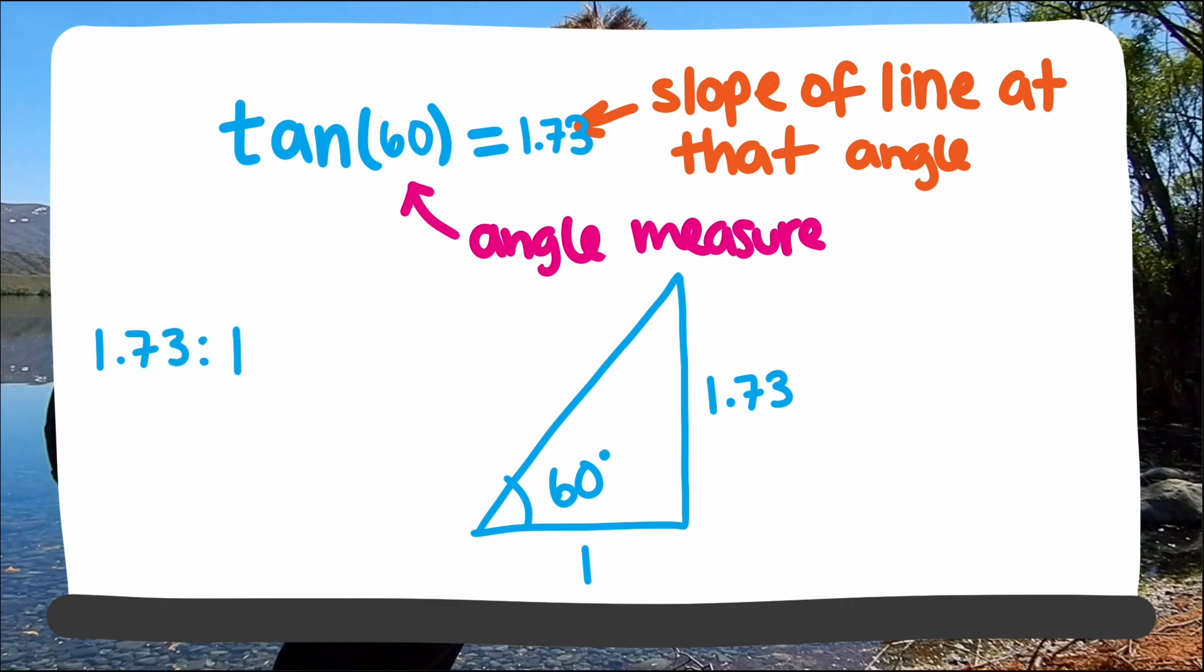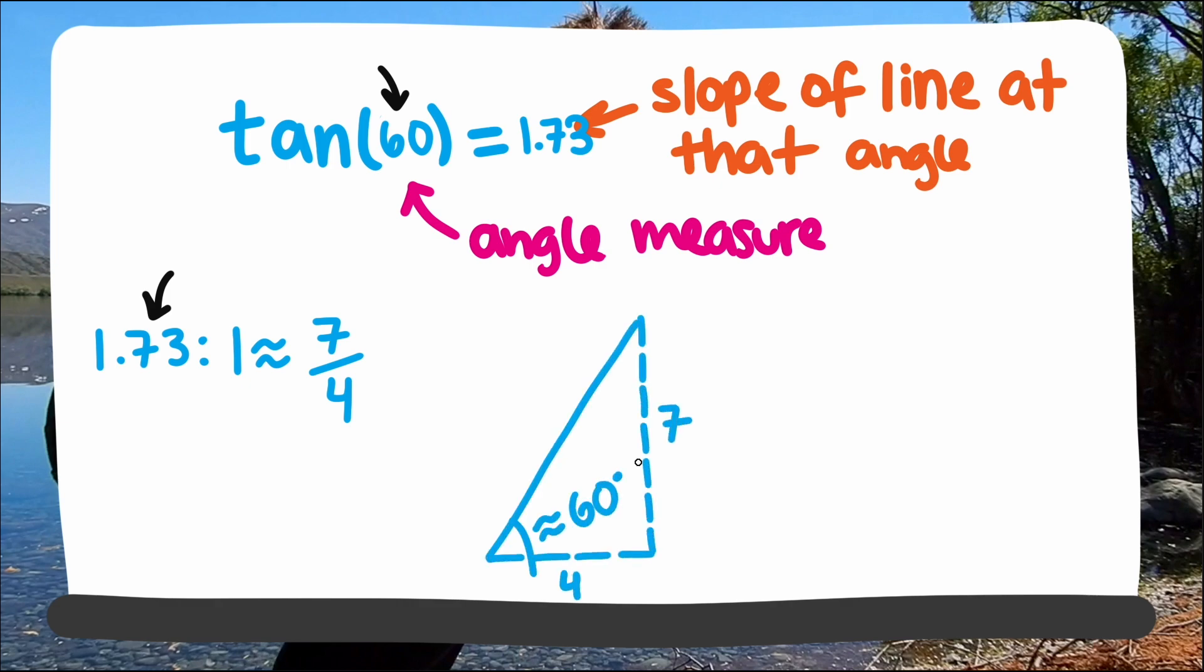For our purposes though, we're interested in using the ratio to create an angle. Since 1.73 is approximately 7 fourths, we could go over 4 units and up 7 to approximate an angle of 60 degrees. Or we could go over 1 unit and up 1.73 units to approximate an angle of 60 degrees.